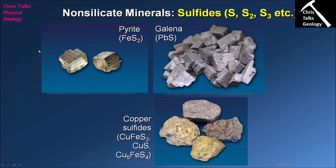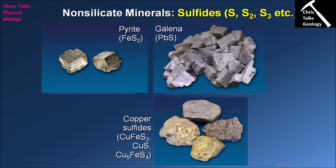The next group of non-silicate minerals are the sulfides. In the case of the sulfides, we have a metal bonded exclusively to sulfur, and just like the oxides, the amount of sulfur is variable. Here are a few examples of common sulfide minerals: pyrite, sometimes referred to as fool's gold, which is iron bonded to two sulfurs; galena, which is lead sulfide with one sulfur; and a mixture of copper sulfide minerals including chalcopyrite, covellite, and bornite — with two sulfurs, one sulfur, and four sulfurs respectively. The key requirement is a metal or metals bonded exclusively to sulfur.